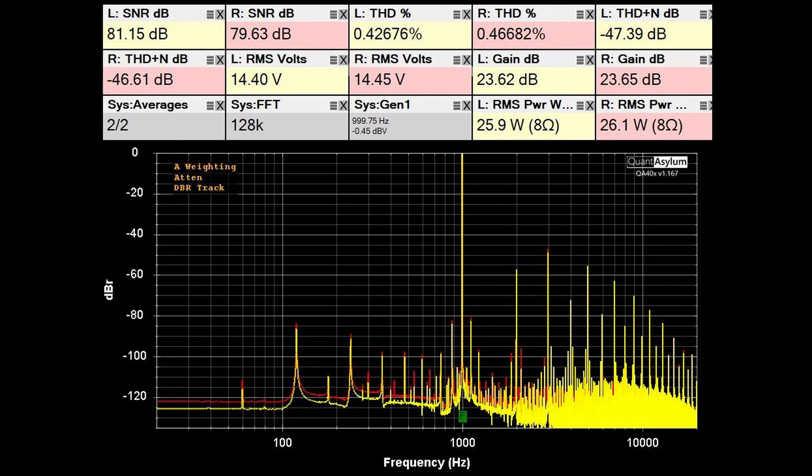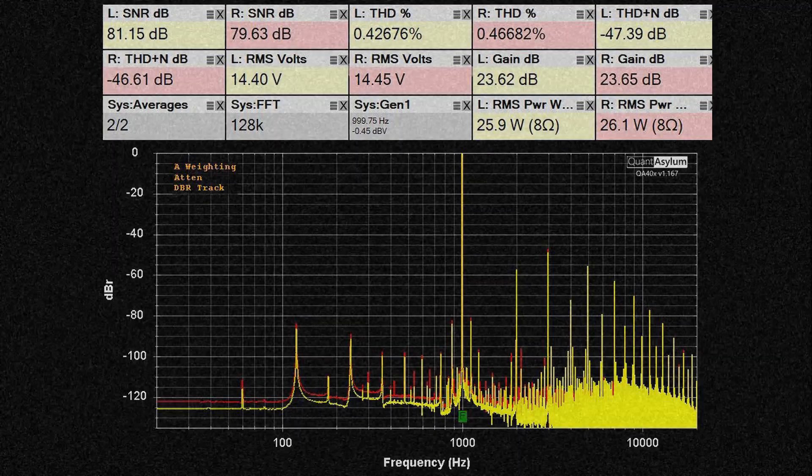Here we have the THD SNR at 1 kHz with the SE401 putting out 26 watts into 8 ohms. And its performance really hasn't changed much since it was operating at 5 watts into 8 ohms. The THD is less than the 0.5% requirement, and the SNR is right around 80 dB. The THD plus noise has not changed that much either.